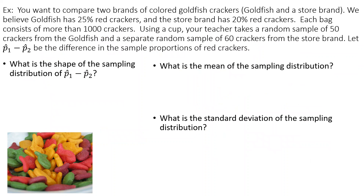Here's one example: you want to compare two brands of colored goldfish crackers — the original Goldfish brand and a store brand. We believe Goldfish has 25% red crackers and the store brand has 20% red crackers. Each bag has more than 1,000 crackers. A teacher takes a random sample of 50 crackers from Goldfish and a separate random sample of 60 from the store brand. What's the mean of the sampling distribution? The mean of P1-hat minus P2-hat equals 0.25 minus 0.20, so it equals 0.05.